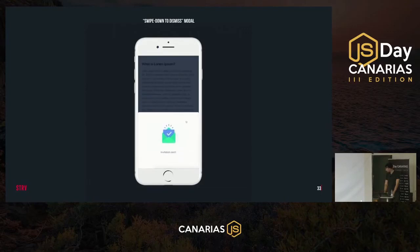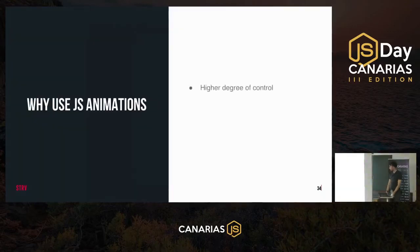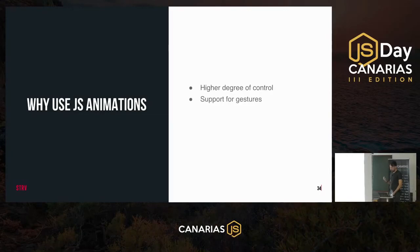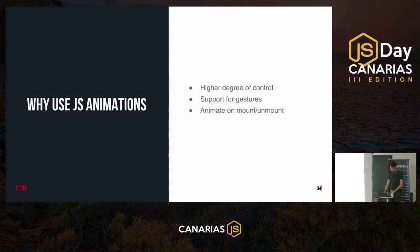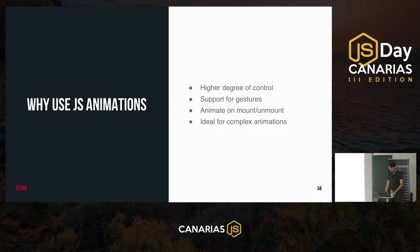With all this code we get our complete interaction — everything works. JavaScript animations really shine where we need a high degree of control. They're ideal when working with gestures, which is simply not possible with CSS animations alone. They allow animating things when they get mounted or removed from the DOM tree, and generally they're the right choice for more complex animations.